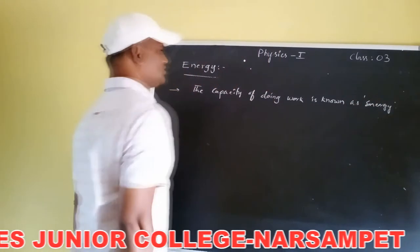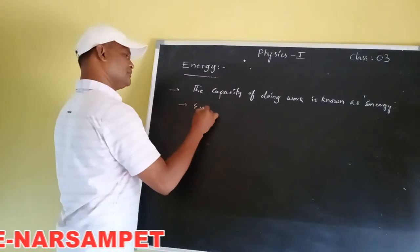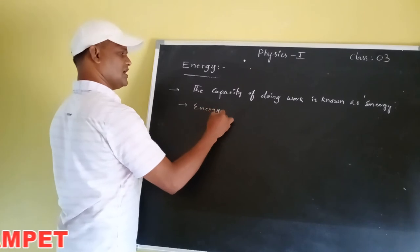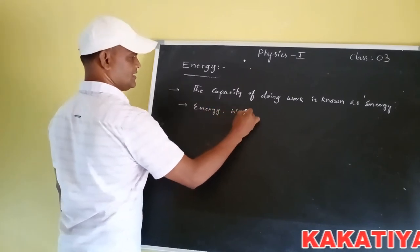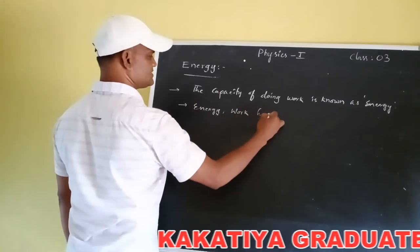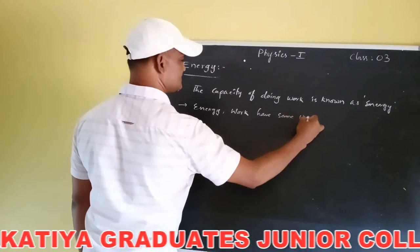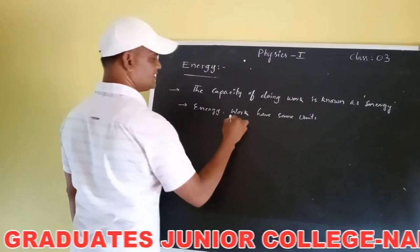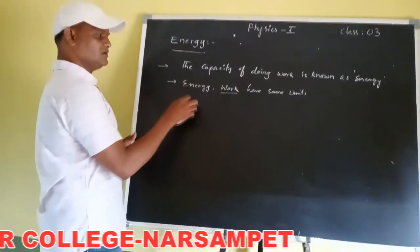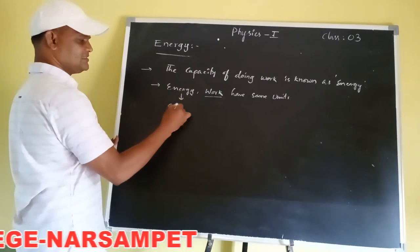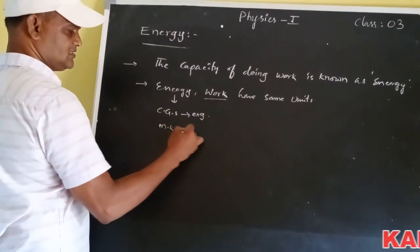Energy and work have the same units. The unit of work in CGS unit is erg, and in MKS unit is joule. Similarly, energy also has the same units — CGS unit is erg and MKS unit is joule.